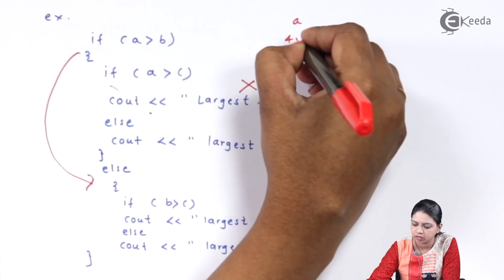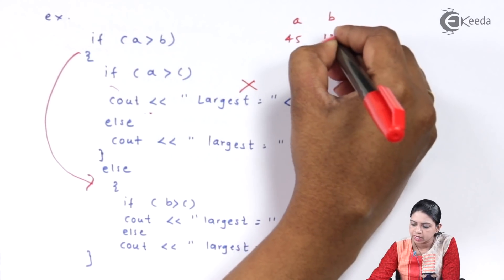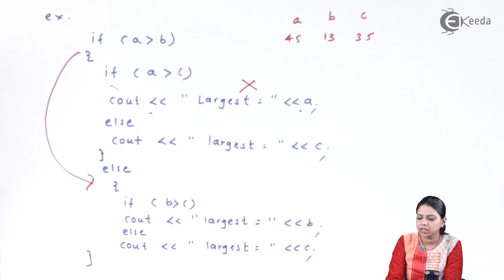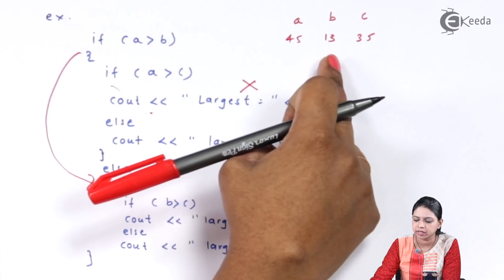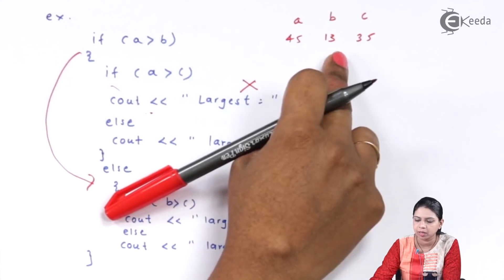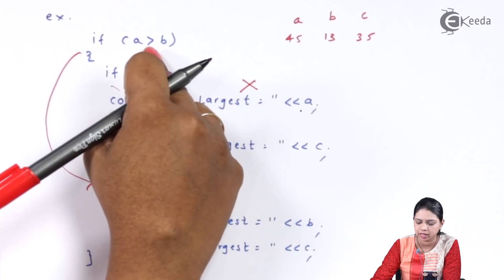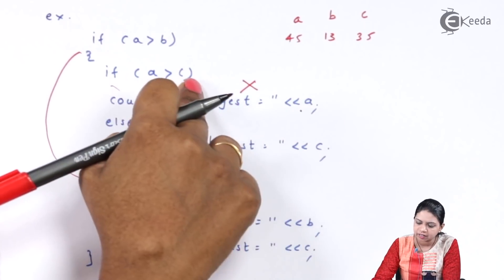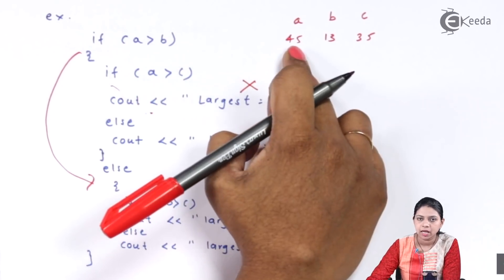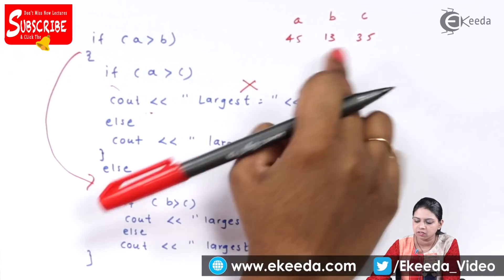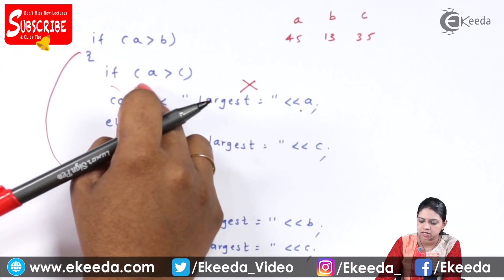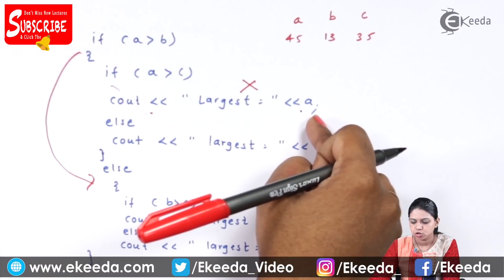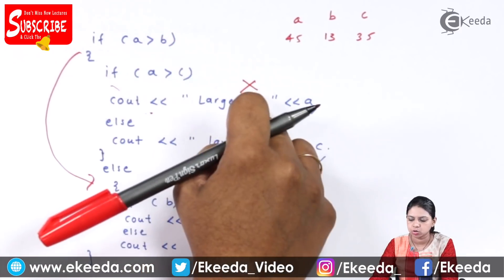For example, suppose A is 45, B is 13, and C is 35. I check if A is greater than B — A is 45 and B is 13, so yes, A is greater than B. So I jump inside and check if A is greater than C. A is 45 and C is 35, so A is greater. I get the result: largest is A. So A was compared with both B and C.